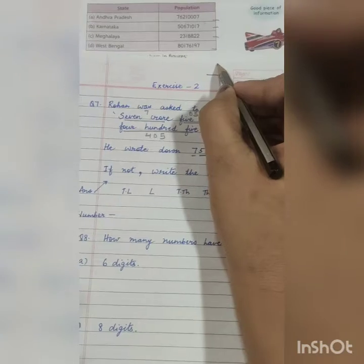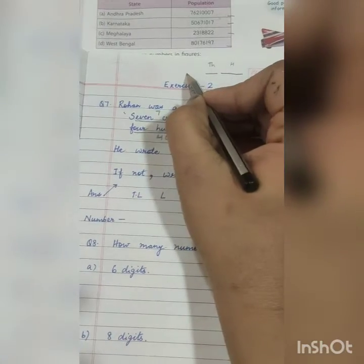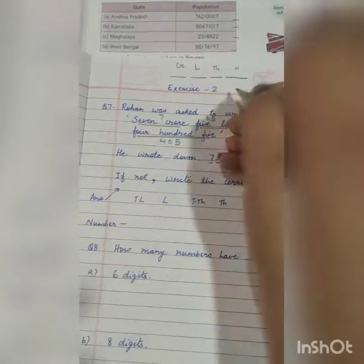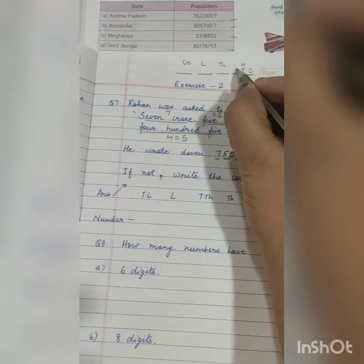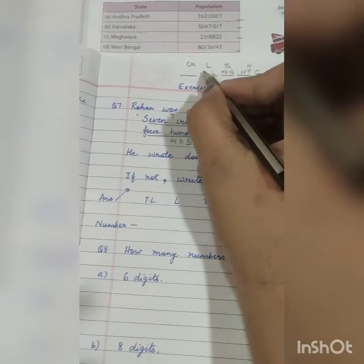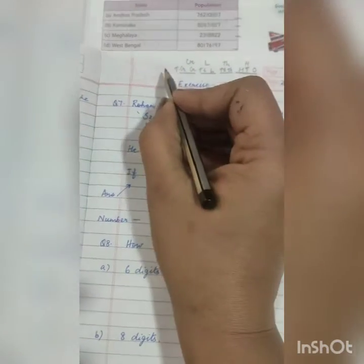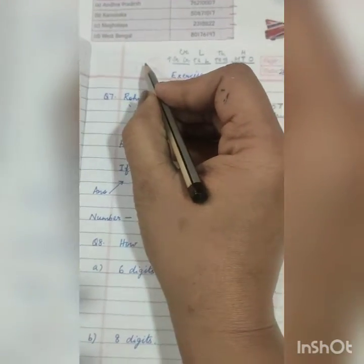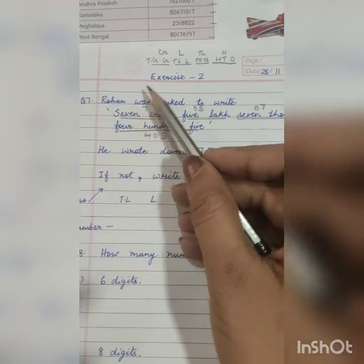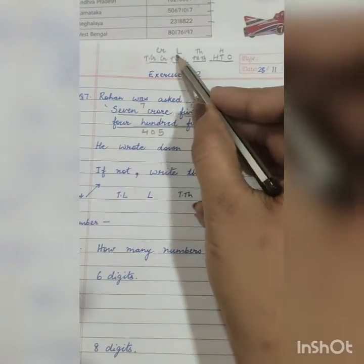Now we have to tell you a trick. Every place value increases like this - if we increase in the future then we have 2 more: Arab and 10 Arab. Now we write it like this. 7 crore, 7 crore means it's in the crore place, not 10 crore. 5 lakh, lakh is not 10 lakh, so we will put 0 in the 10 lakh place.